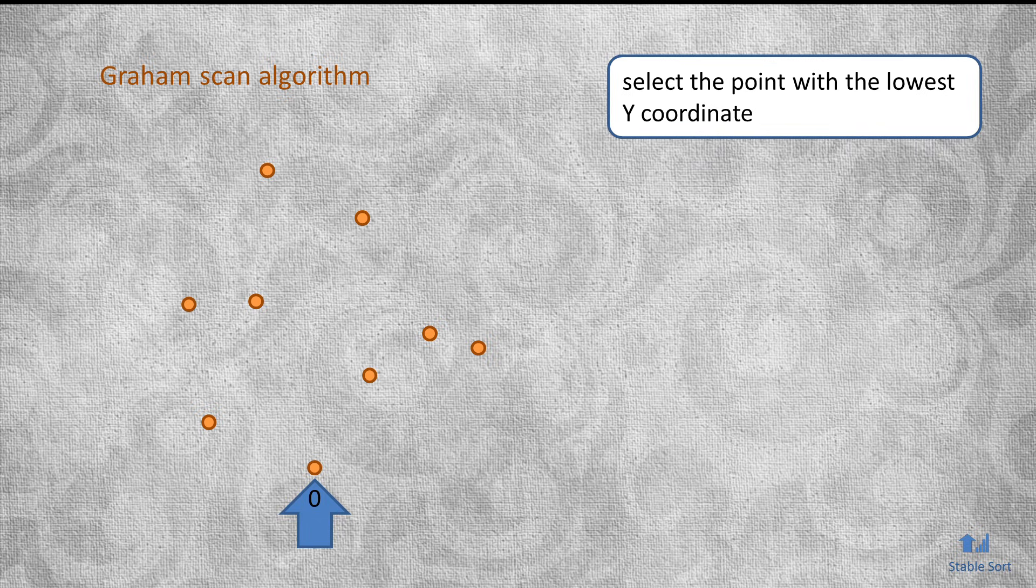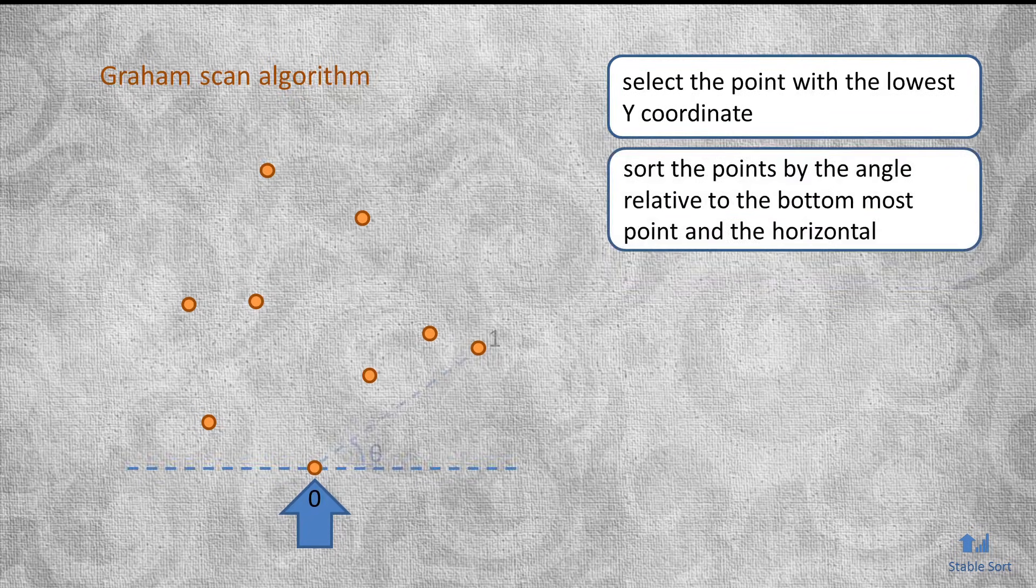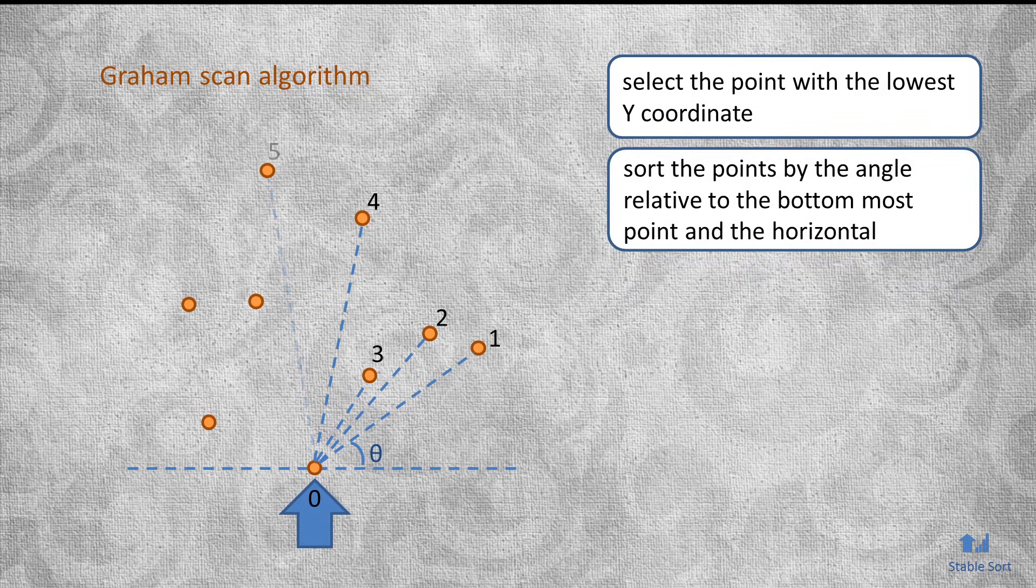Of course, it could just as well pick the topmost or the leftmost or the rightmost point, but by convention it picks the bottommost. Then it sorts the remaining points, ordering them by the angle that they make relative to the bottommost point and the horizontal.